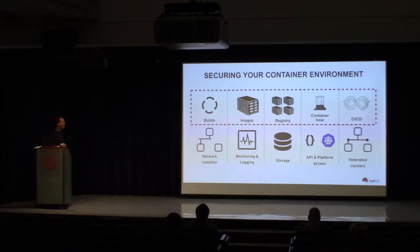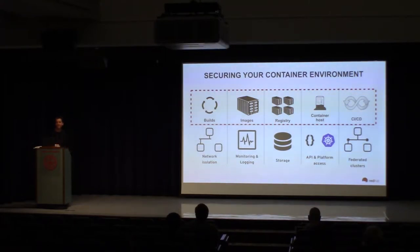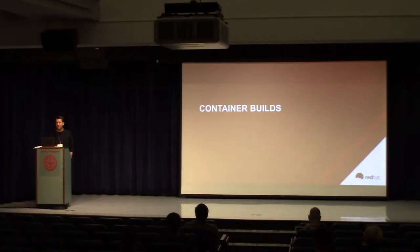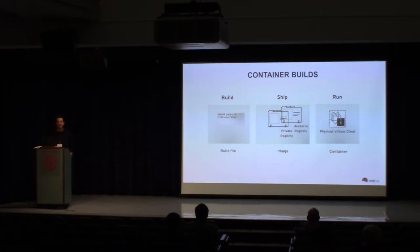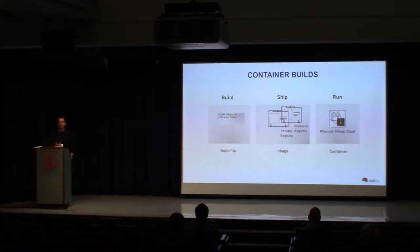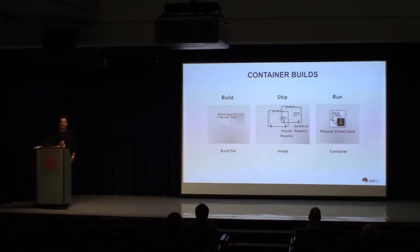Today we're going to talk about some best practices when it comes to securing your environment from builds, images, registry, container hosts, and CI/CD to start with. The basic flow for building out your containers is to build, ship, and run. You define the spec in your build file — this is your blueprint for how to build the container image. Then you share it by pushing it into a registry, and then you can pull it down across your private, public, physical, or virtual environment and have that run on a standard runtime.